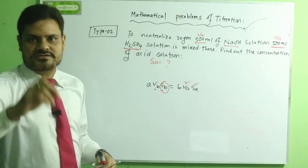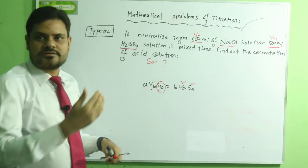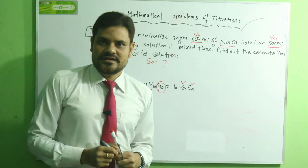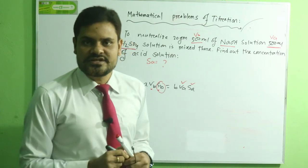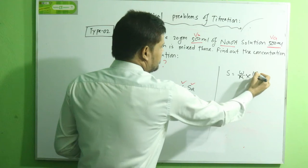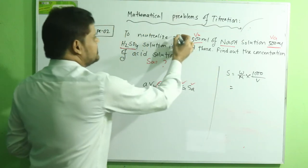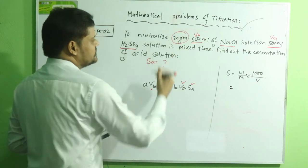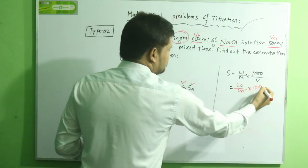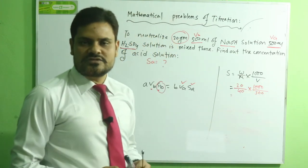Our duty is to first find the concentration of sodium hydroxide, then submit the reaction and apply the volumetric equation to find Sa. We use the molarity equation from a previous lecture: S = (W / M) × (1000 / V). For sodium hydroxide: W = 20 g, M = 40 g/mol (molecular mass of NaOH), and V = 500 mL. Using this equation, we can calculate the molarity of the base.